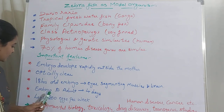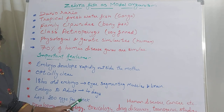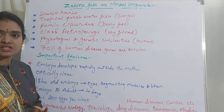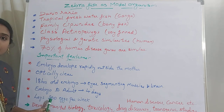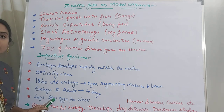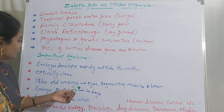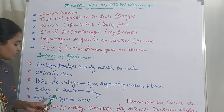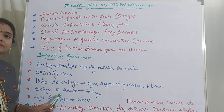Zebrafish lay nearly 200 eggs per week, providing many embryos for study. Their lifespan is up to 3 to 5 years under laboratory conditions, so every week you get 200 eggs over many years. Research becomes very manageable with so many model organisms available in a short time, and you can also study their offspring across many generations.